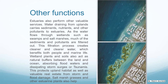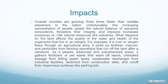Wetland plants and soils also act as natural buffers between the land and ocean, absorbing flood waters and dissipating storm surges or tsunamis. This protects upland habitat as well as valuable real estate from storm and flood damage. Unfortunately, the increasing concentration of people upsets the natural balance of estuarine ecosystems, threatens their integrity and imposes increased pressures on vital natural resources like estuaries.